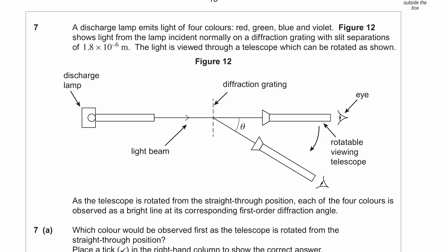We have a discharge lamp that emits light of four colors: red, green, blue, and violet. Figure 12 shows the light from the lamp incident normally on a diffraction grating. For a diffraction grating, we use the equation n λ = d sin θ, with slit separation d = 1.8 × 10⁻⁶ m.